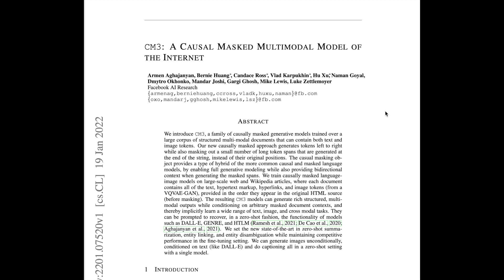We'll start off with Facebook AI Research's new CM3, a causal masked multimodal model of the internet. This is one of the models you can't miss in the latest development of things like DALL-E, CLIP, and GPT-3 — the sequence of massive models that have a big impact. The particular reason CM3 is so interesting is the way they combine different data sources: text, hypertext like HTML markup, and image tokens from a vector quantized variational autoencoder GAN.